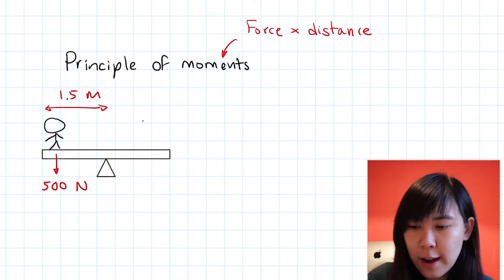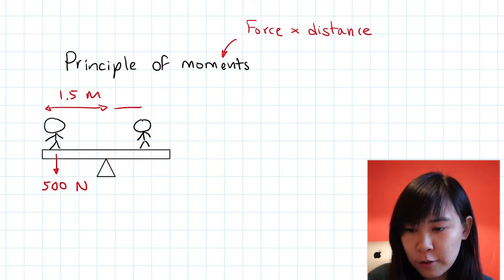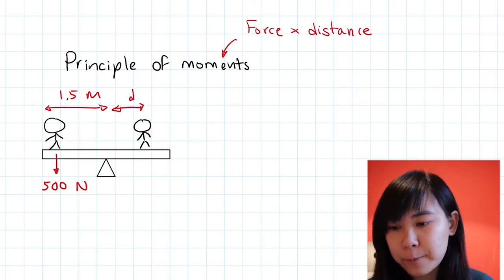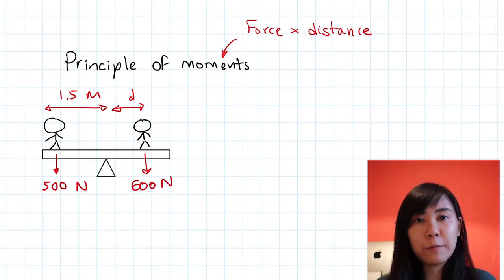So I'm just going to put this guy on the right-hand side of the seesaw. I don't know what the distance is, so I'm just going to call it d. And let's say this guy weighs 600 newtons. So here we can use the principle of moments to work out what d is.